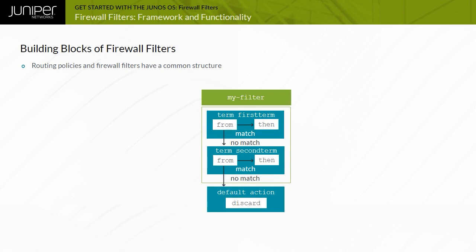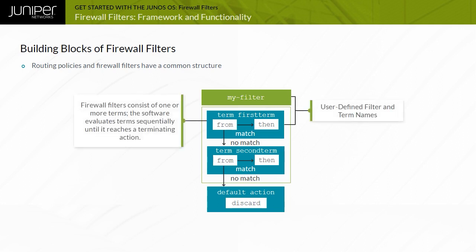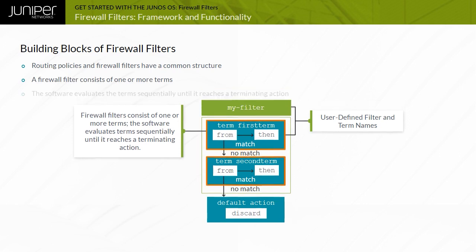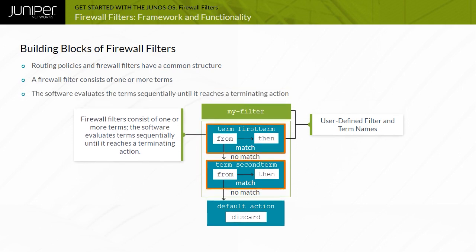Although routing policies and firewall filters serve different purposes and have different match and action conditions, they both have a common structure. As with routing policy, the fundamental building block of a firewall filter is the term. A firewall filter consists of one or more terms. The software evaluates terms sequentially until it reaches a terminating action.